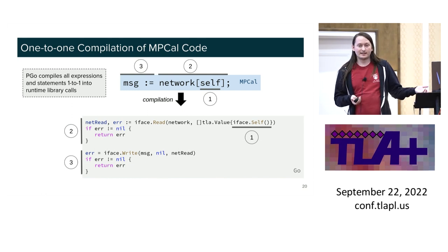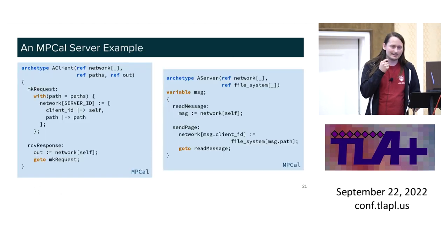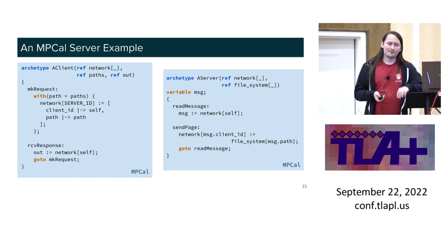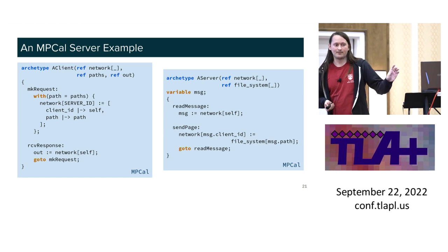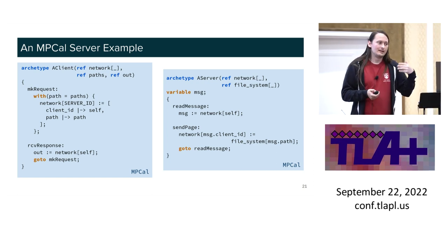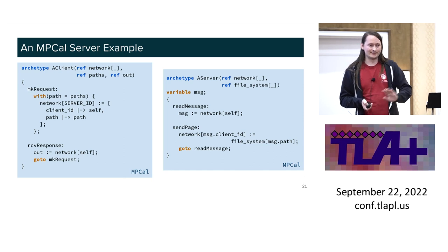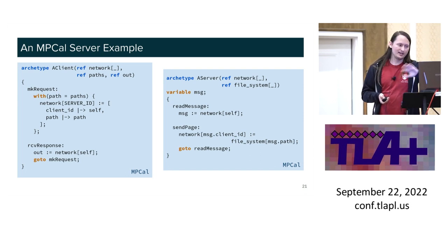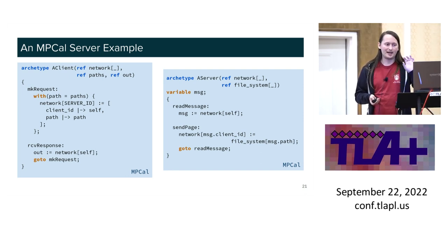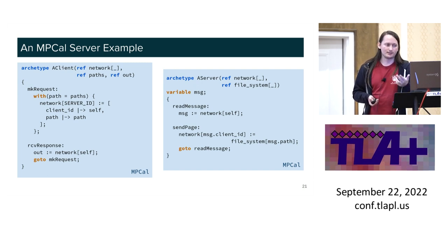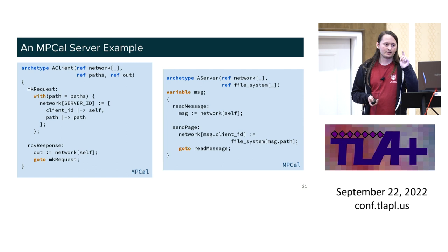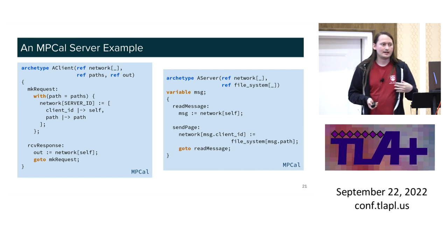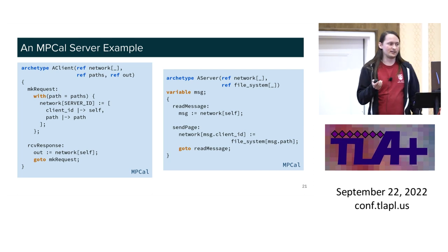Except for the elephant in the room: what about all that I/O stuff? Here we have a still somewhat simplified pair of archetypes — a client and a server. The client makes some request, the server receives the request, sends a response, and the client reads the response: four actions in total, which could be running concurrently or across different machines. The relationship between the actions is: make request → read message → send page → receive response — just this little circular graph.